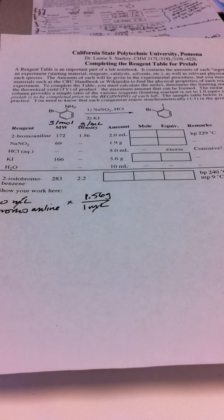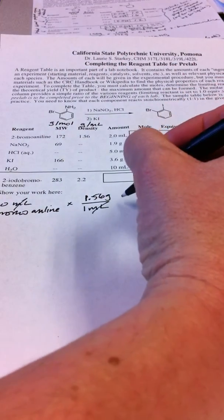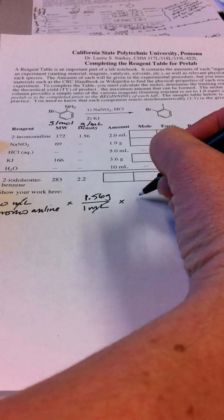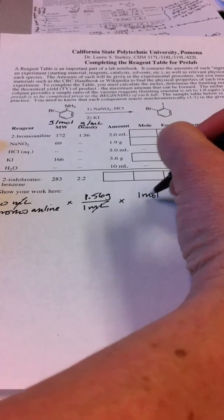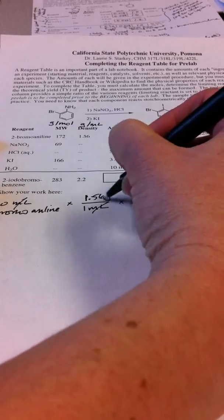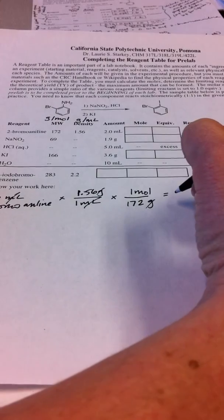This might be useful if you want to, instead of measuring out the 2-bromoaniline by volume, if you want to weigh it out on a balance, you could do this calculation to find out how many grams that is. But we're interested in the moles so we can keep going. We'll just keep that number in our calculator and continue. We know that for every 1 mole of 2-bromoaniline we have 172 grams. So now again, my grams cancel and I could do this calculation.